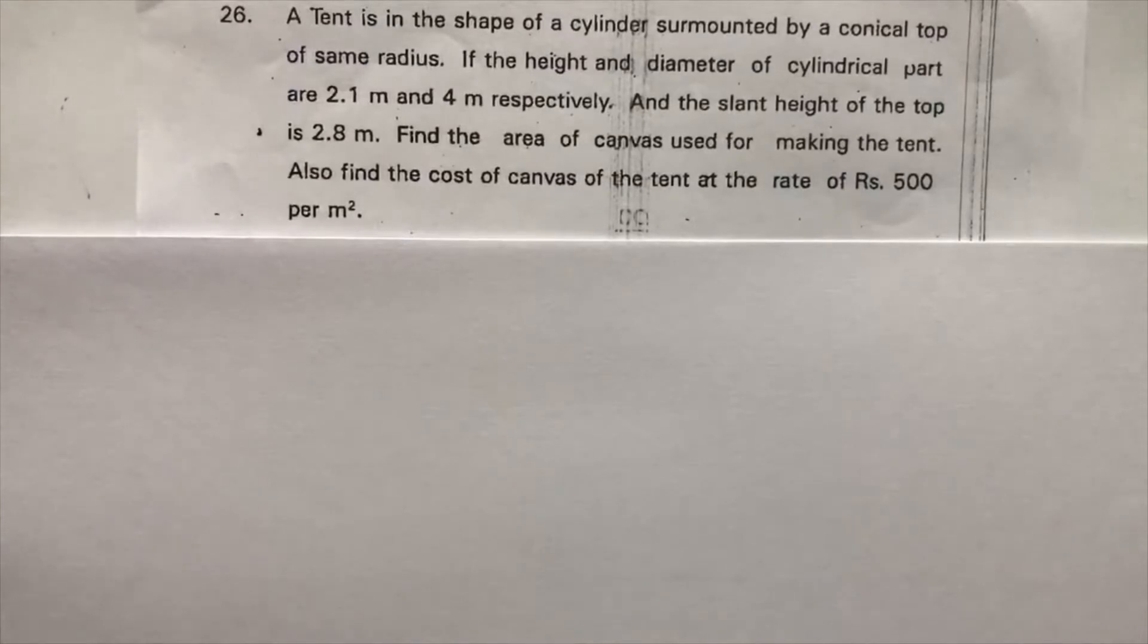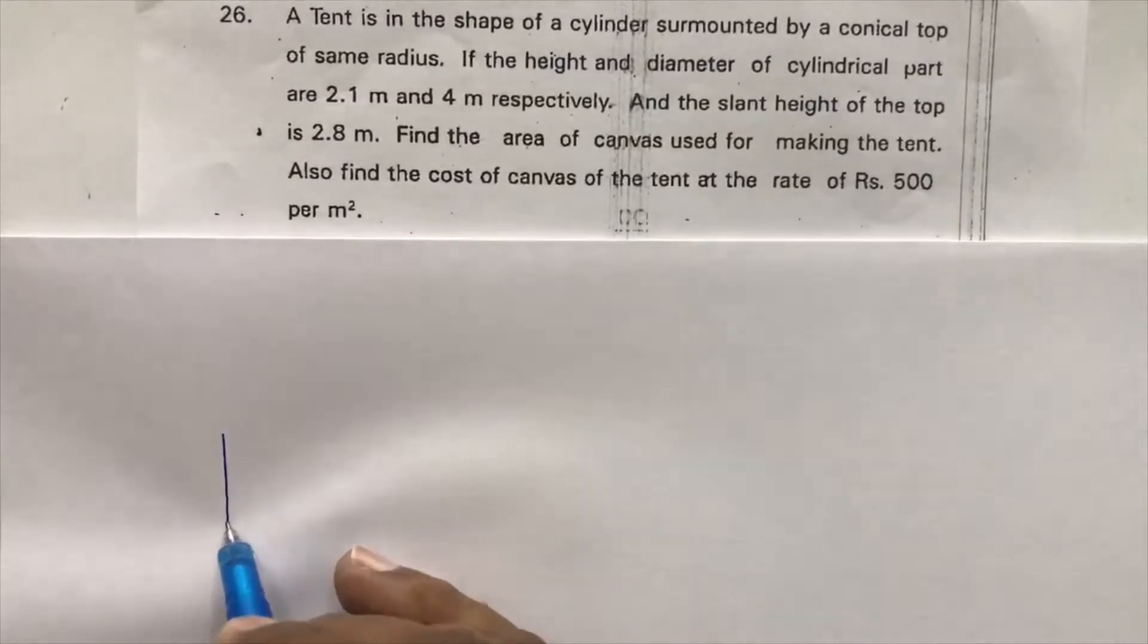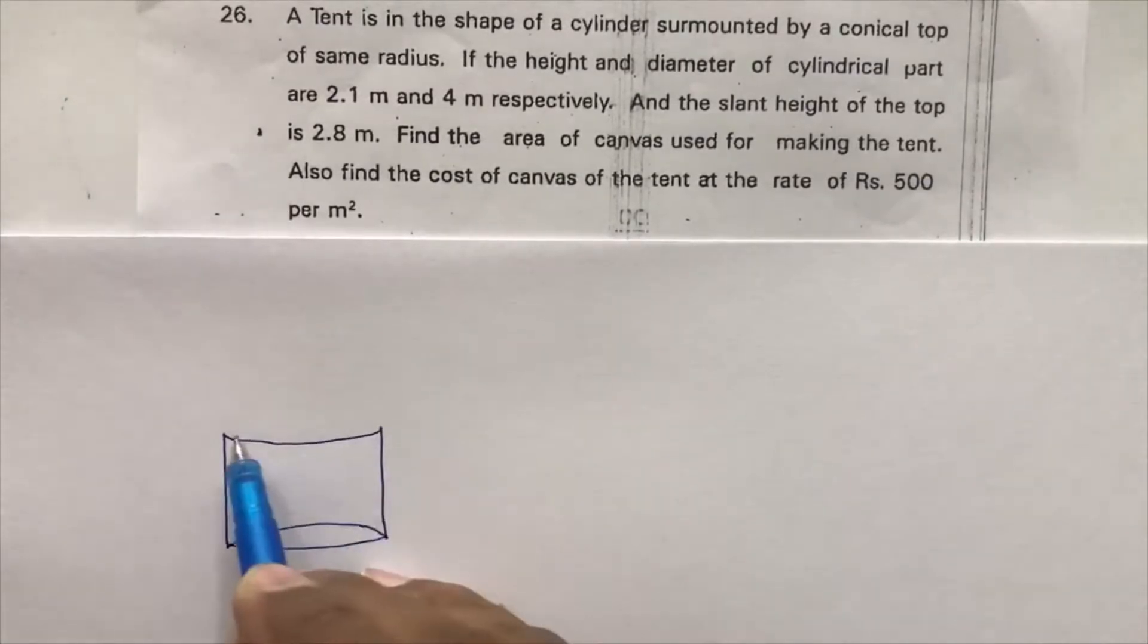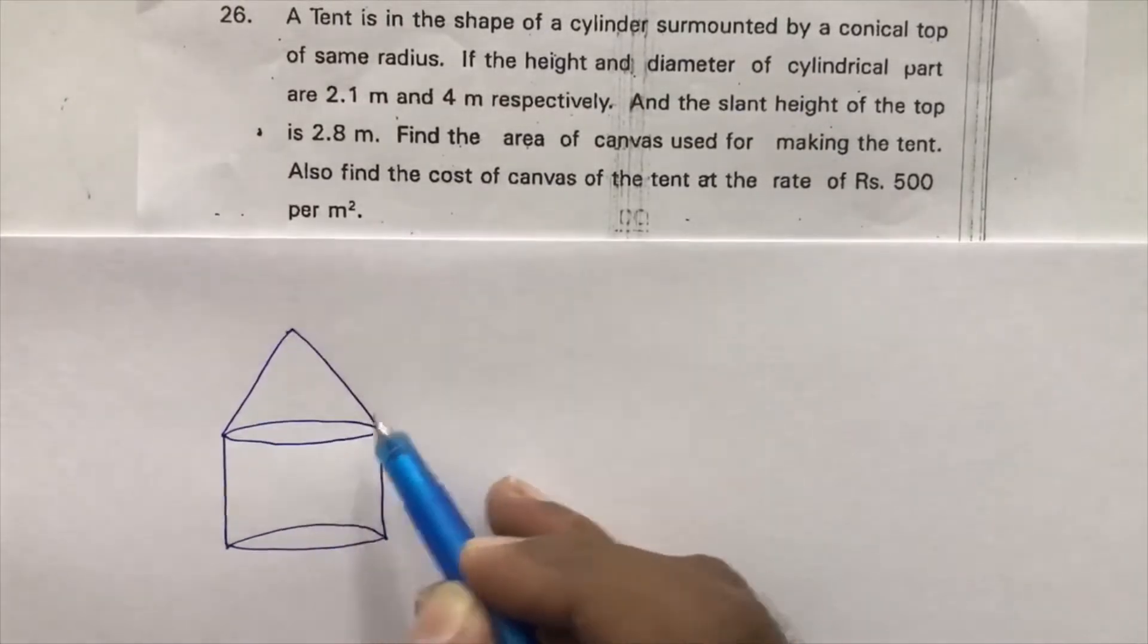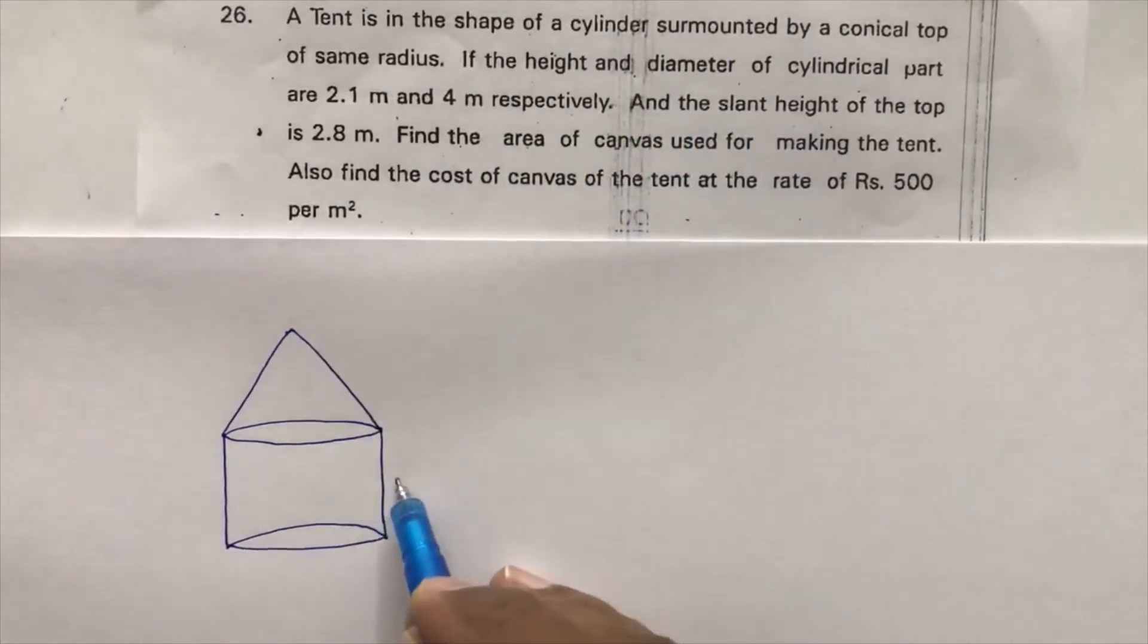A tent is in the shape of a cylinder surmounted by a conical top of same radius. If the height and diameter of the cylindrical part are 2.1 m and 4 m respectively, the radius will be 2 meters.